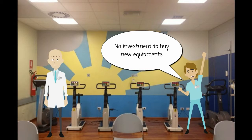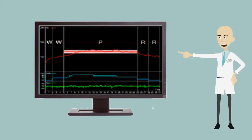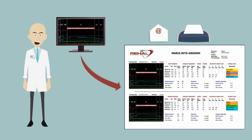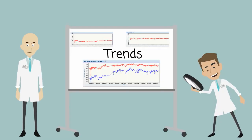During the training there is a real-time recording of data about the patient's response to workloads administered. In this example, we see in red the course of the heart rate, in blue the workload expressed in Watts, and in green the pedaling speed. A comparison of subsequent sessions allows the evaluation of the effectiveness of the therapeutic protocol.